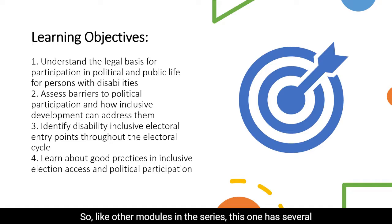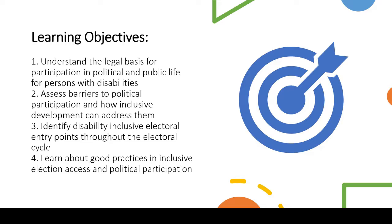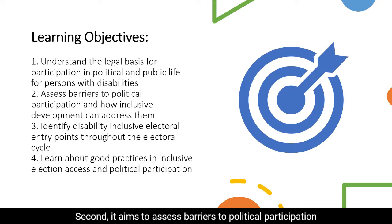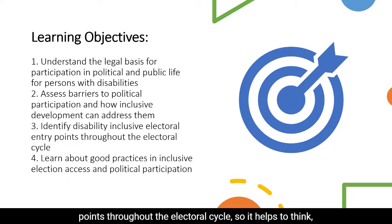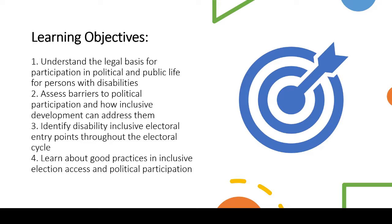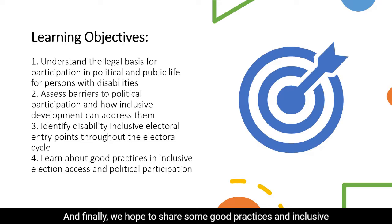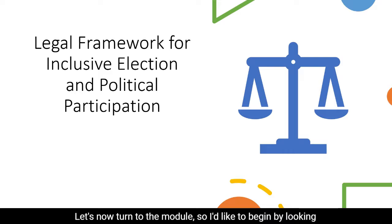Like other modules in the series, this one has several key learning objectives. These are to understand the legal basis for participation in political and public life for persons with disabilities. Second, it aims to assess barriers to political participation and how inclusive development can help to address them — for example, by supporting organizations of persons with disabilities in trying to identify and dismantle electoral access barriers. It aims to identify disability inclusive electoral entry points throughout the electoral cycle and think about how to design an election access project through development assistance. Finally, we hope to share some good practices in inclusive election access and political participation.